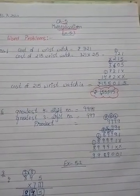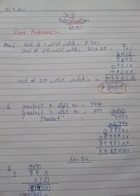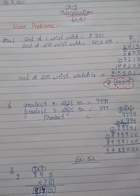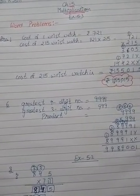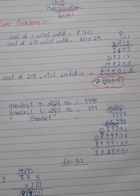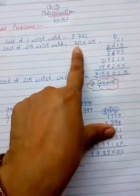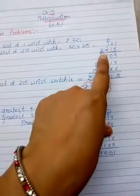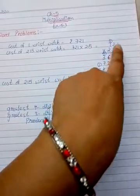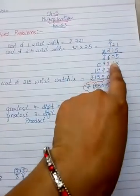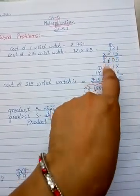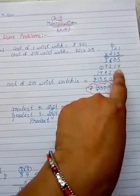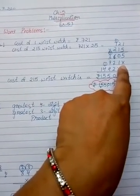Cost of one wristwatch is ₹721 as they already told you. Cost of 215 wristwatches: you have to multiply 721 with 215. So 721 multiply by 215. 5 ones are 5, 5 twos are 10, write 0, carry 1. 5 sevens are 35 plus 1 is 36. Then put a cross below, leaving one space digit.